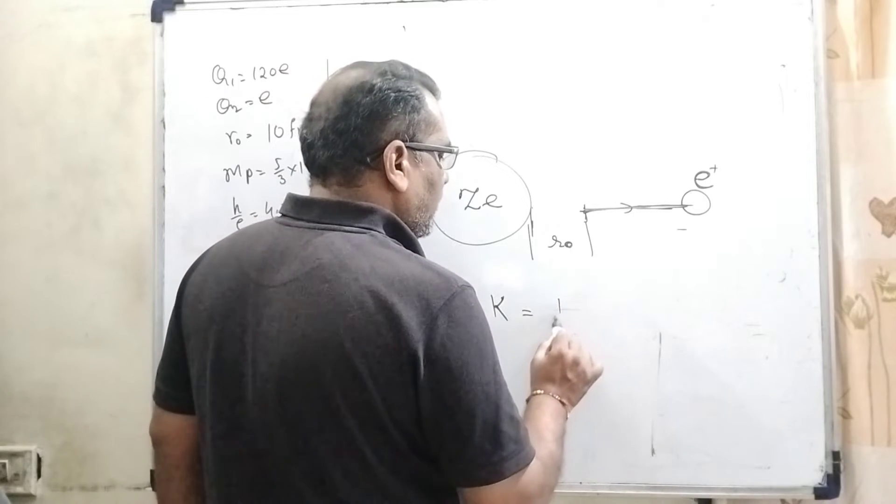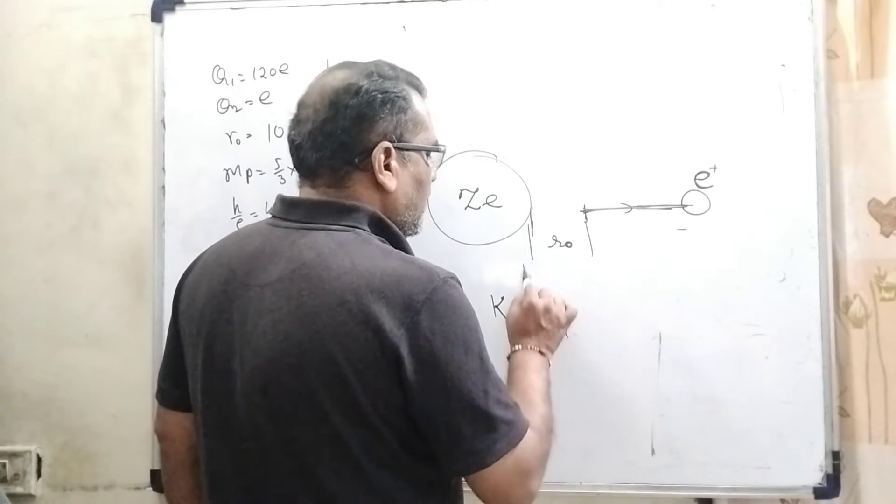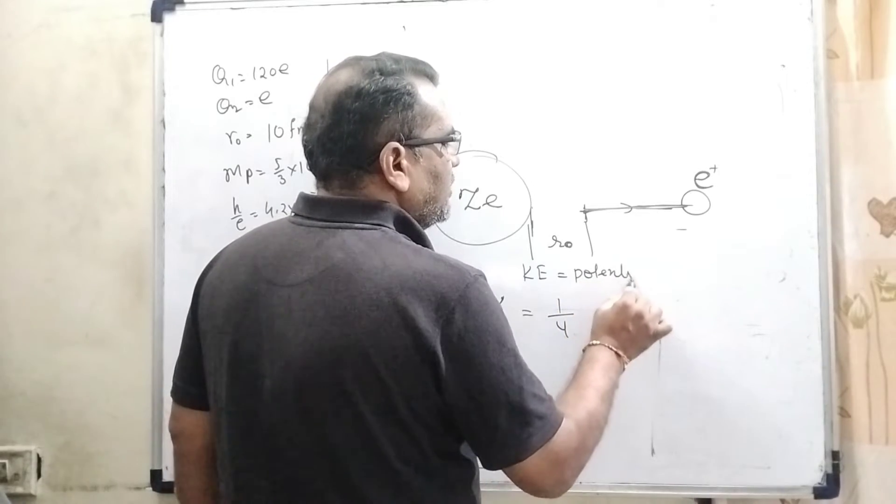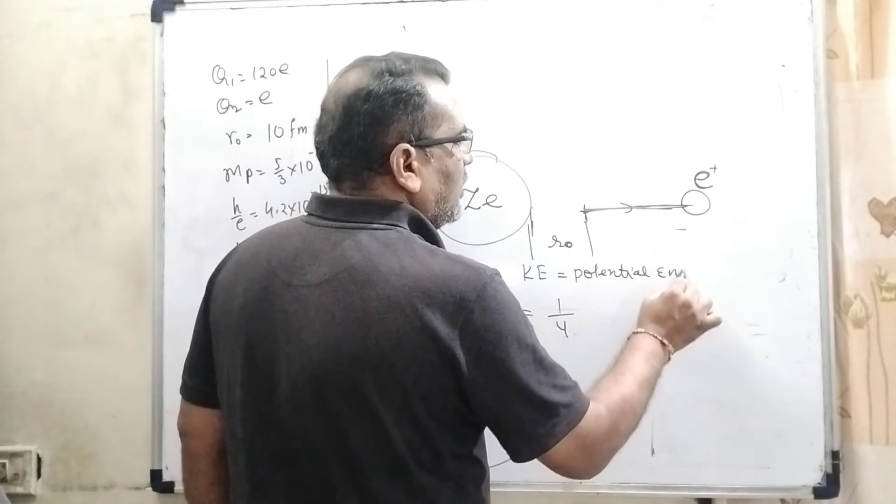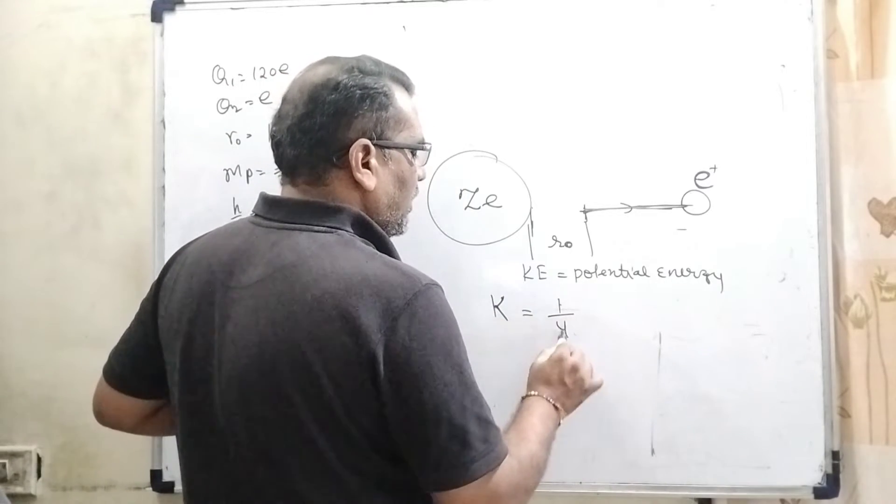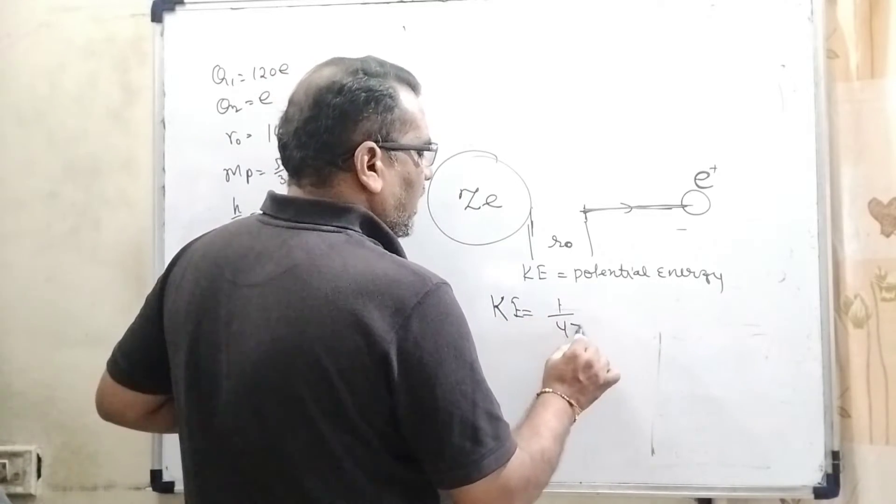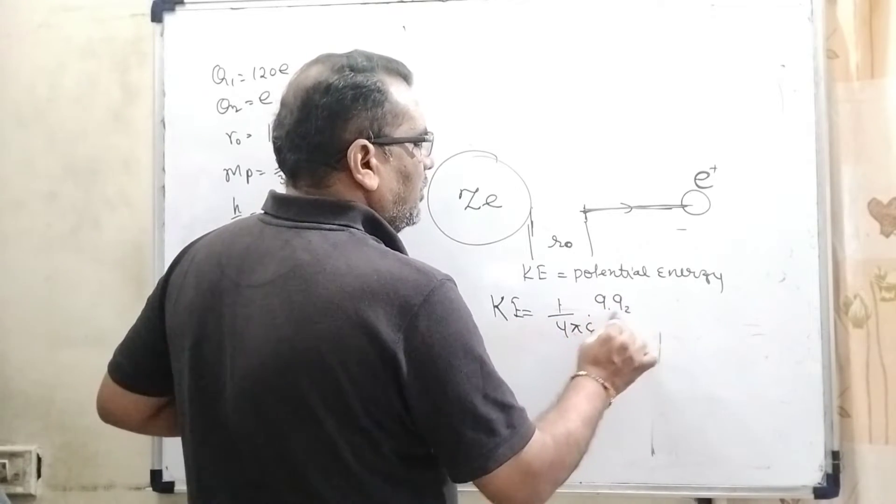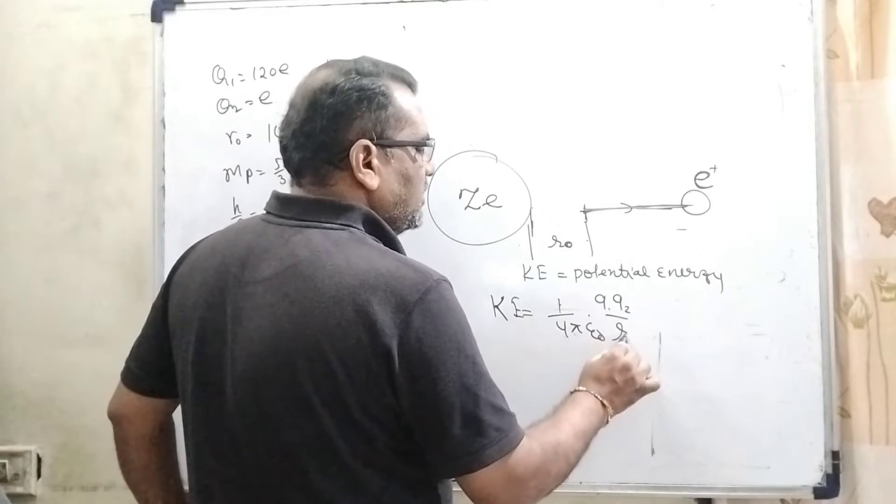Therefore, from law of conservation of energy, kinetic energy equals 1/(4πε₀) × q₁q₂/r₀, where r₀ is the closest approach. This kinetic energy equals the potential energy.